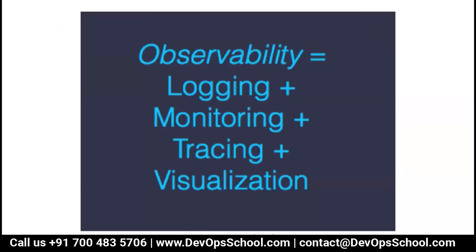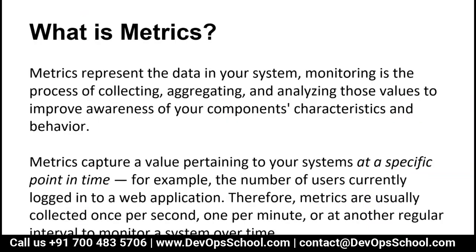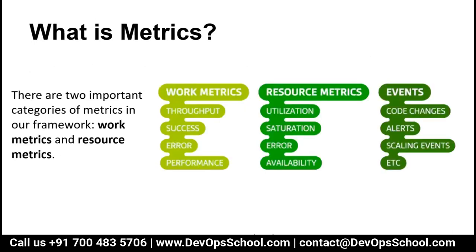Observability means setting up logging, monitoring — which means alerting — tracing, and visualization, where visualization means dashboards. Resource metrics include CPU, RAM, disk, memory, database. Some example metrics are throughput, success, error, performance, utilization, saturation, availability, code changes, alerts, and scaling events. Events in a system include login, logout, and similar actions.